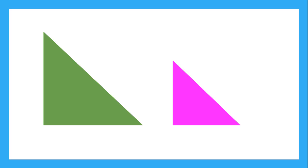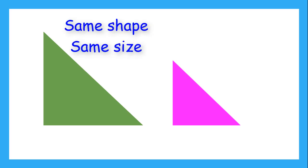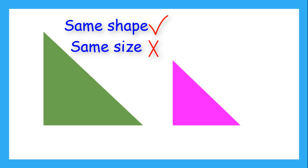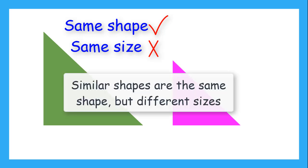Now what about these two triangles? They are the same shape, right? Yes, but the pink triangle is obviously smaller than the green triangle. So these triangles are not congruent. When two figures are the same shape but different sizes, we say the shapes are similar. So these two triangles are similar.